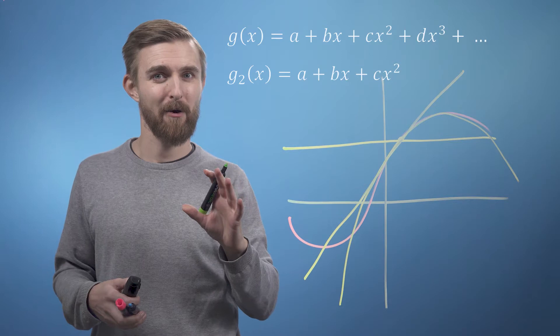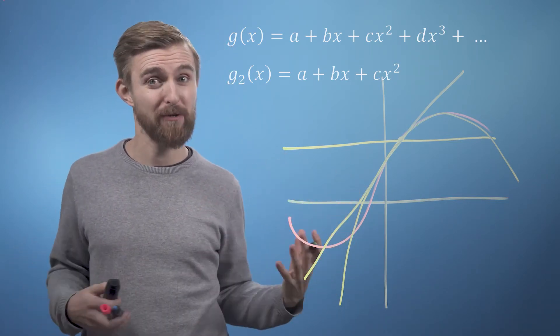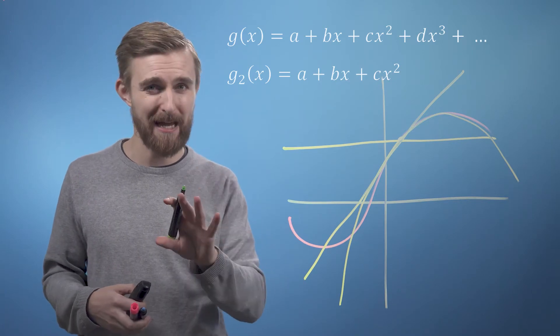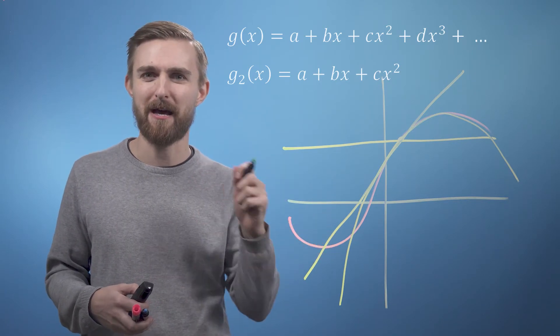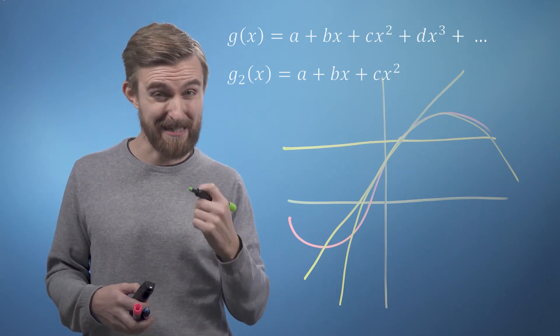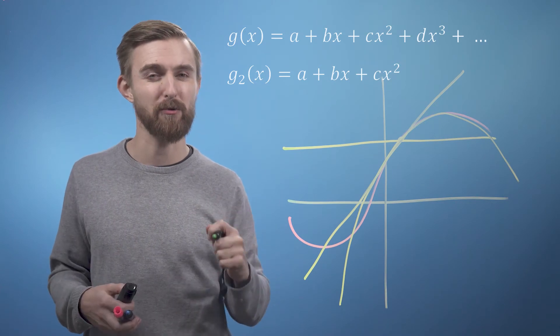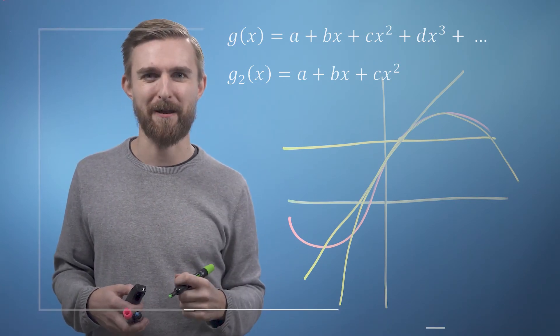Hopefully without having gone into any of the details about the maths, you'll now be able to match up some mystery functions to their corresponding truncated Taylor series approximations in the following exercise. In the next video we're going to work through the detailed derivation of the terms, but I hope this activity will help you not to lose sight of what we're trying to achieve in the end. See you then.